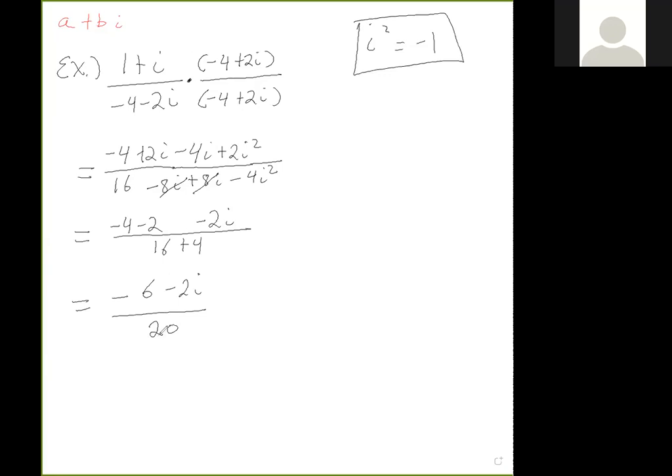Almost done. I'm going to simplify just a little bit more. I can factor out a 2 from the numerator, which leaves me with 2(-3 - i) over 20. I can cancel the 2 with the 20, and it reduces to (-3 - i) over 10. So this leaves me with -3/10 - (1/10)i.